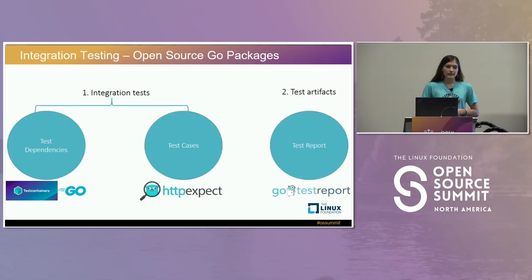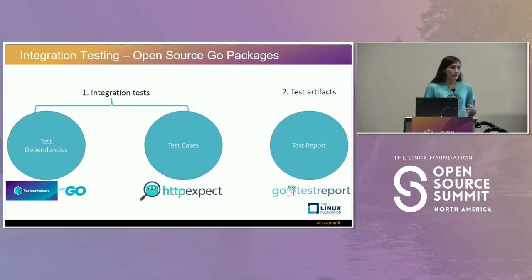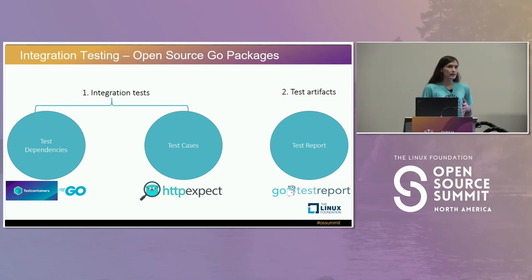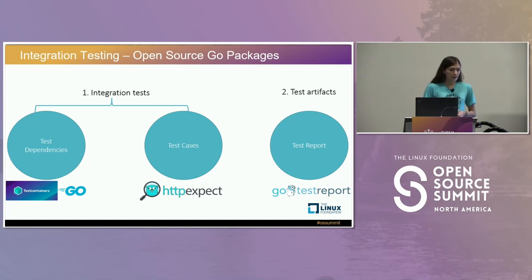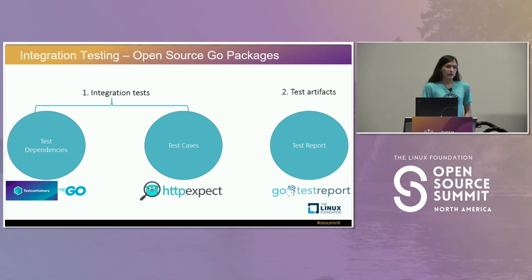For integration testing, we used the testcontainers-go package for a homogenous way to spin up services both normally and in a testing environment, since we were using Docker Compose on the gateway side. We also used HTTP expect, a Go open source package for RESTful calls on services under test. For our test report release requirement, we used the go-test-report package, another open source Go package.